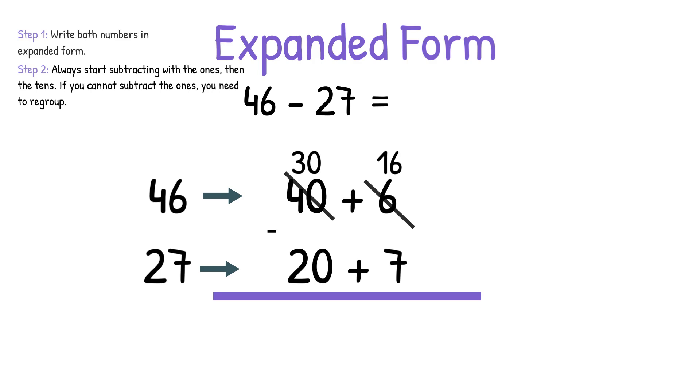Now we can do our subtraction. 16 minus 7 equals 9, then we'll put our little plus sign, because our answer is in expanded form. 30 minus 20 equals 10. Step three is stack your expanded form answer on top of each other, and then add, starting in the 1s column, then the 10s.